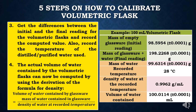Step 3: get the difference between the initial and the final reading for the volumetric flask and record the computed value. Also record the temperature of the distilled or purified water used. In the example, getting the difference between initial and final reading gives a computed mass of water of 99.6314 grams. The recorded temperature of water is 28 degrees Celsius.